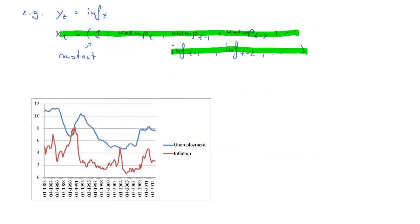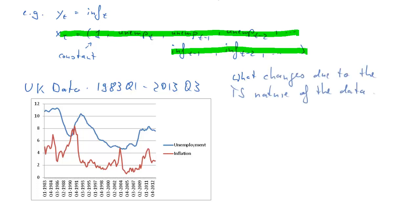So let's look at some real data. Here we have two time series for the UK from 83 quarter 1 to 2013 quarter 3, the unemployment and inflation annual series. The question is now, what changes if we have to consider time series data? Now one of our Gauss-Markov assumptions was that the samples of yt and xt are iid. They are random samples. That was assumption a2, meaning that one observation is independent from the next. Now this is clearly not the case.